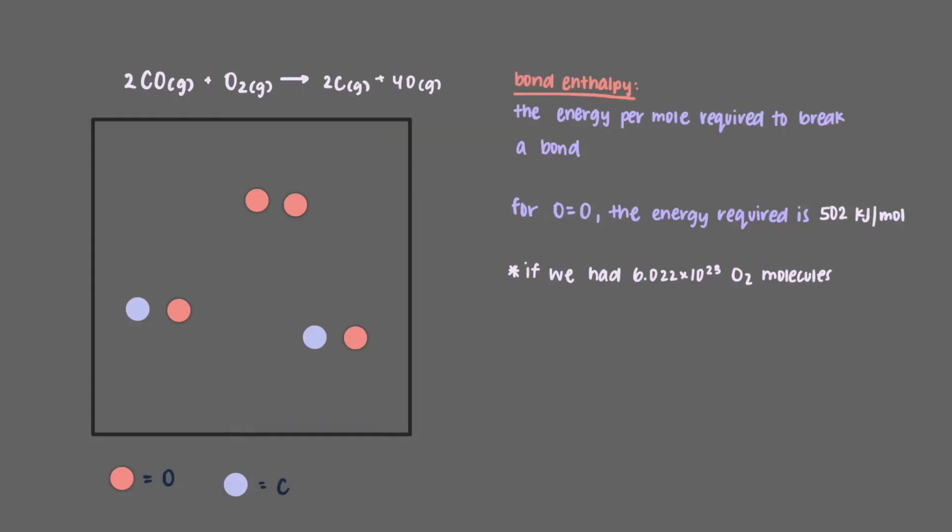That means that if we have 6.022 times 10 to the 23rd oxygen molecules, and we want to break those up into 12.044 times 10 to the 23rd oxygen atoms, it will cost us 502 kilojoules.